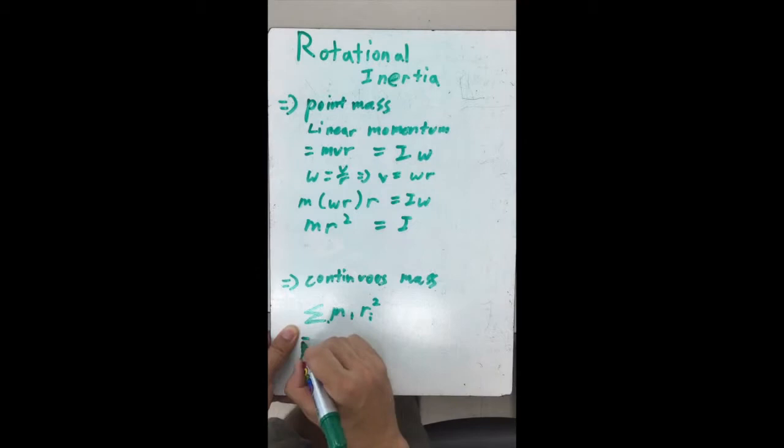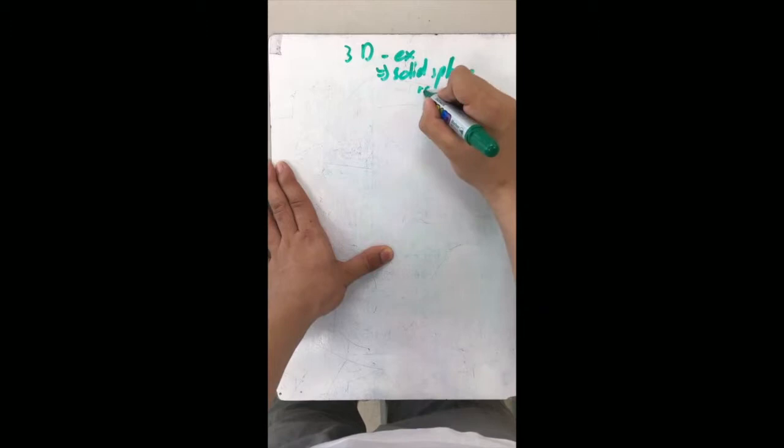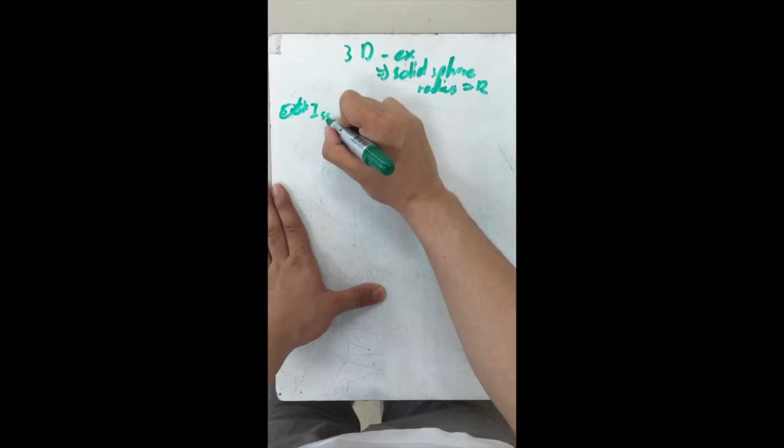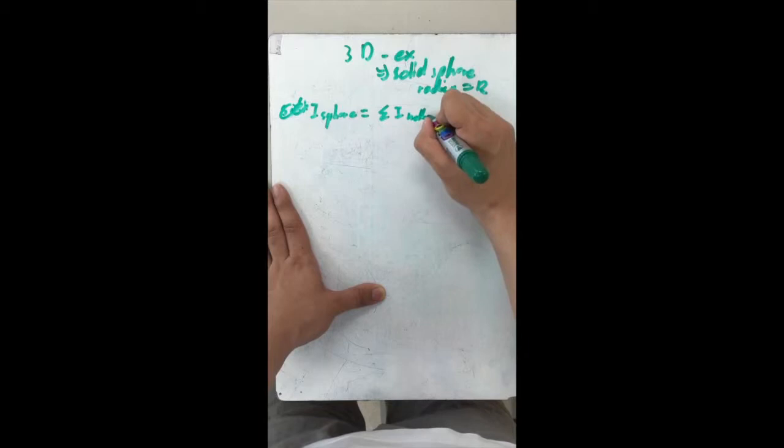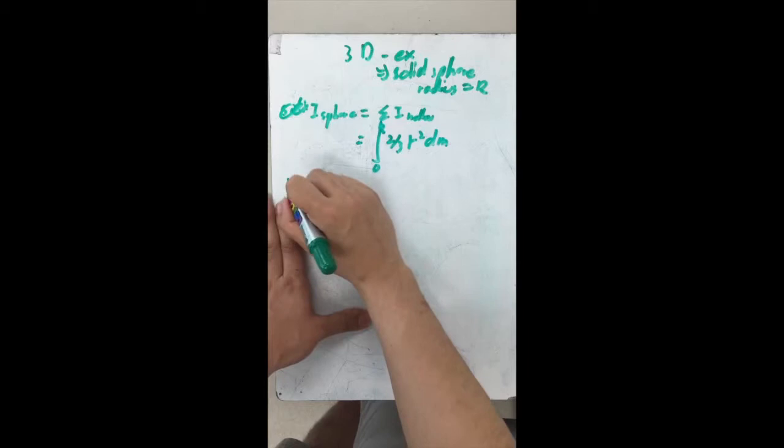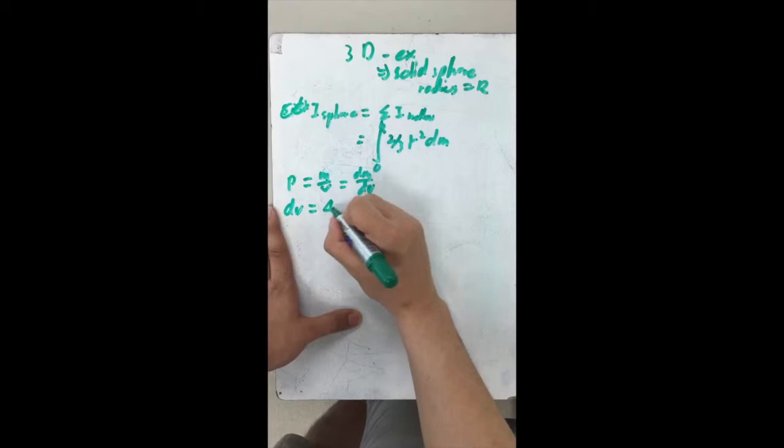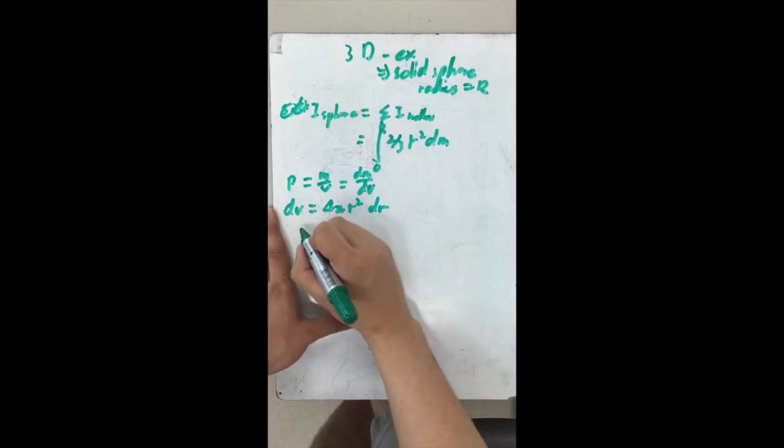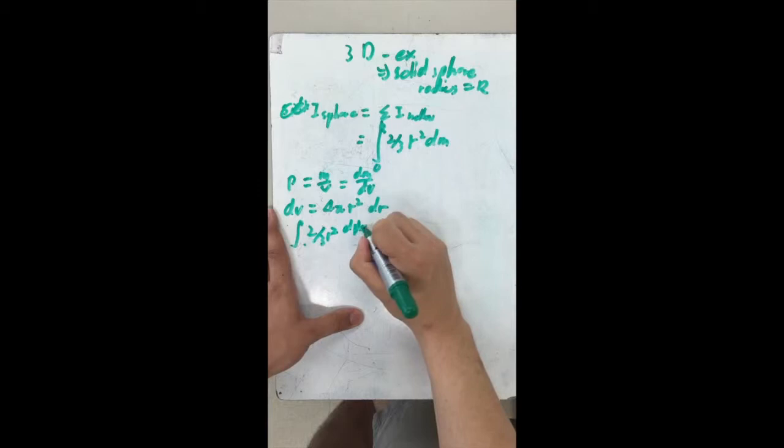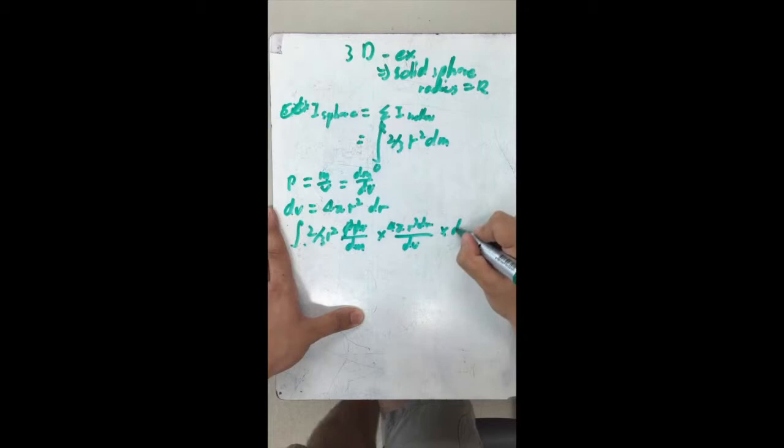In the case of a continuous mass, there is a sigma sum of the previous equation, which is equal to the integral of 0 to m of r squared. The 3D example would be a solid sphere with a radius of large R. The inertia of a solid sphere is the same as the sum of the inertia of hollow spheres, which could be written as the integral from 0 to capital R of 2/3 radius squared dm. To simplify, we need to use multiple equations. First, its density equals mass over volume, when in a smaller scale equals change in mass over change of volume. The second equation to be used is change in volume is equal to 4π radius squared dr. If we put together the two equations, it becomes 2/3 r squared density times dv over dm times 4π r squared dr over dv times dm.